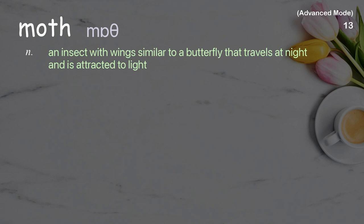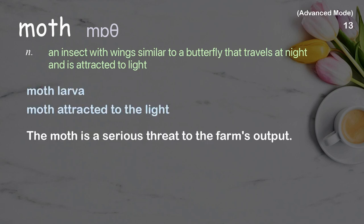Moth. An insect with wings similar to a butterfly that travels at night and is attracted to light. Examples: moth attracted to the light. The moth is a serious threat to the farm's output.